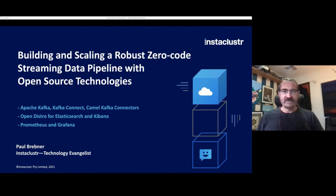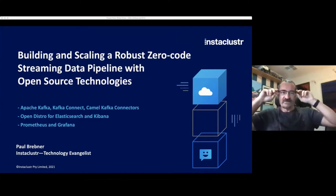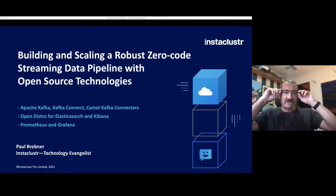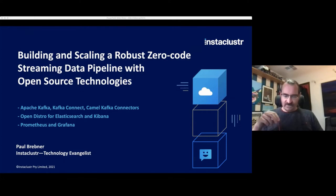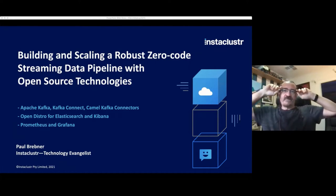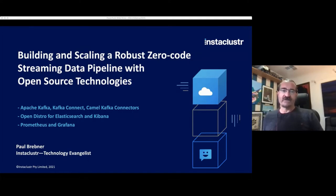Good evening, everybody. Thanks for the invitation and thanks for the intro from Stephen and Scott. Hopefully this talk is of interest to the audience tonight. So yes, basically it's a pipeline talk. It's based on a whole bunch of open source technologies. In particular, we're going to be looking at Apache Kafka, Kafka Connectors, Open Distro for Elasticsearch and Kibana, and Prometheus and Grafana — a whole lot of potentially interesting technologies, and this is the first time I've connected all of these up together in this particular way.